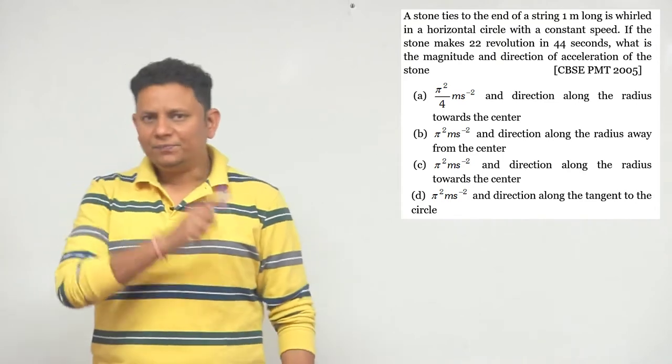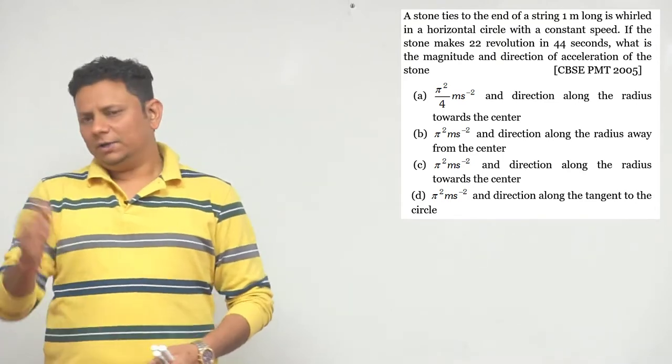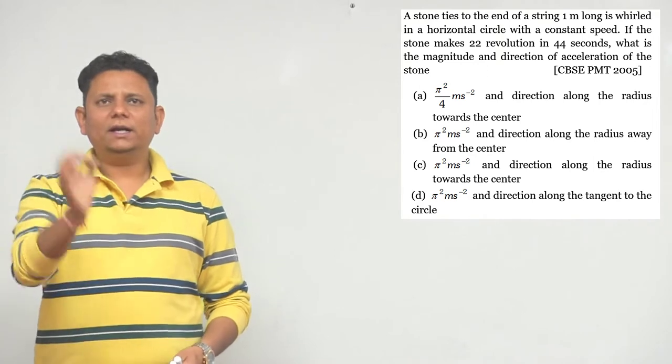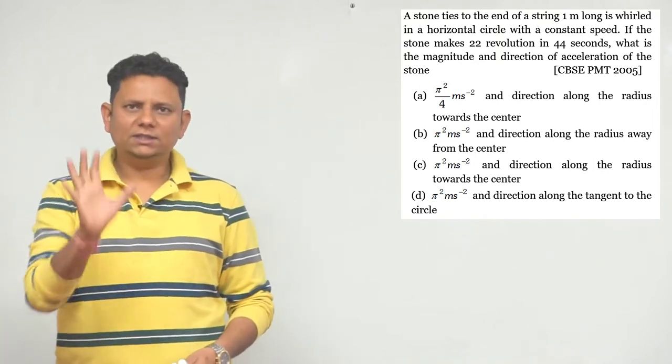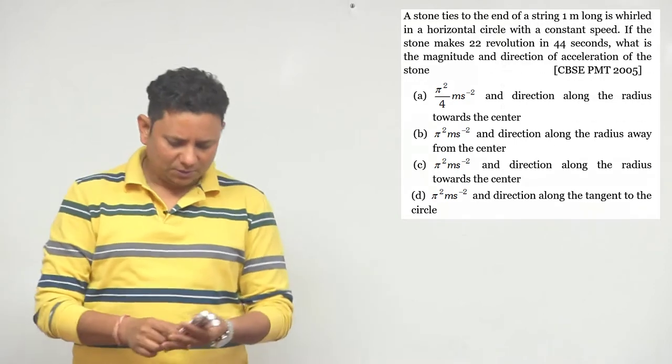Now in this particular case, we notice that it's a horizontal circle with constant speed, so this is a case of uniform circular motion.